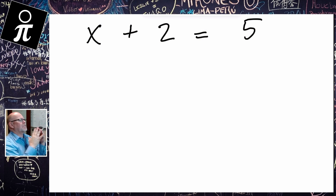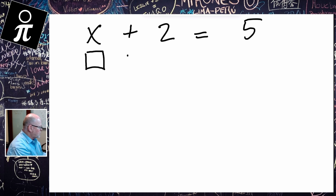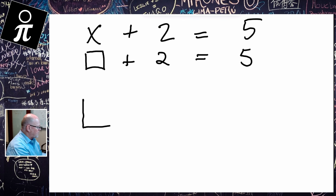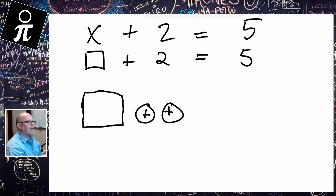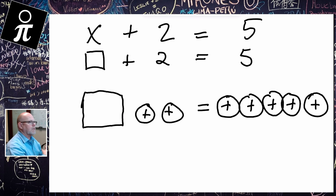Let's start with something super simple: X plus 2 is equal to 5. We want students to think of this as a box plus 2 equals 5. How are they going to model this pictorially? They're going to draw a box to represent the unknown, and then for the plus 2 we draw two circles to indicate our positive 2's. And then our 5 is going to look like five positives.